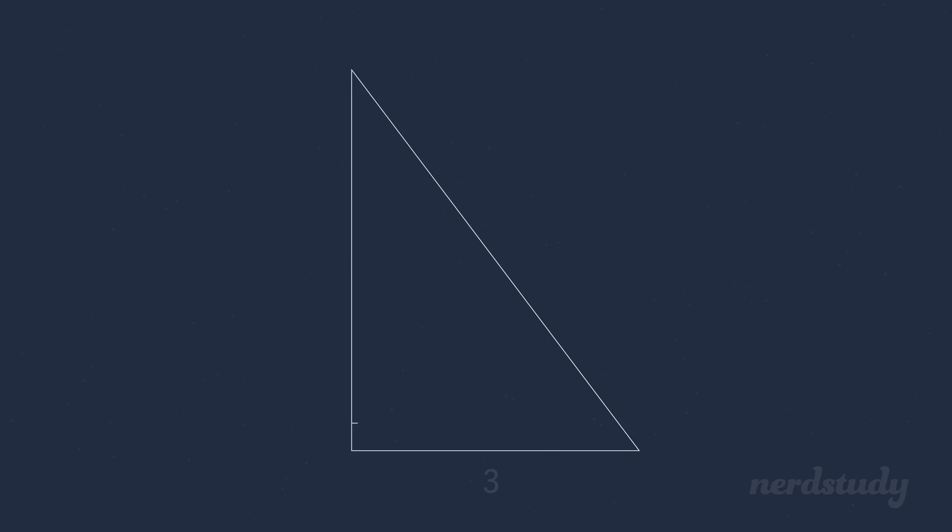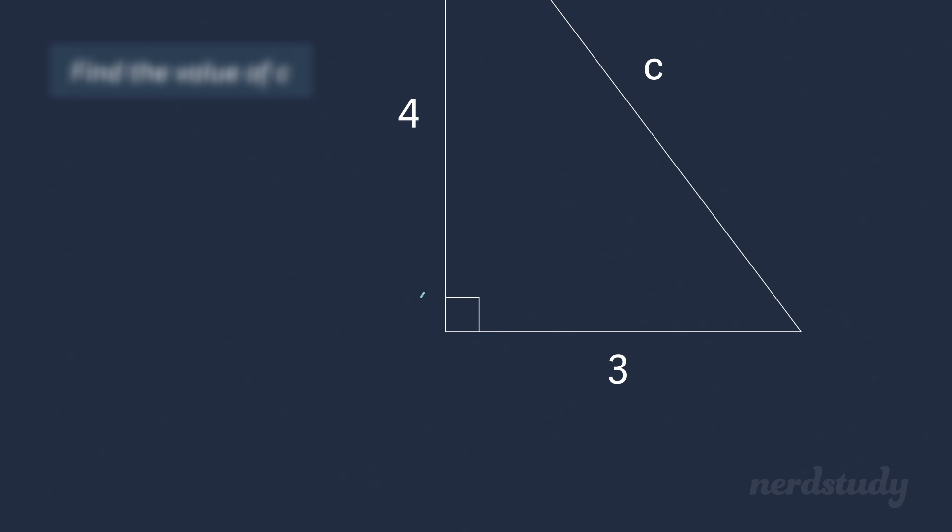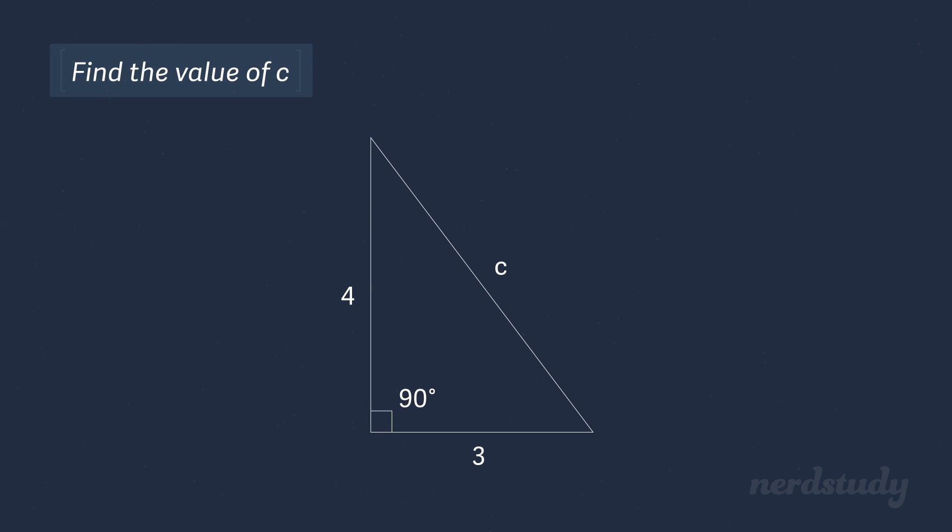Alright, so here's a triangle. We see that one of the side lengths is 3 and the other is 4. We want to find the length of this side right here. First of all, can we use the Pythagorean theorem? The answer is yes, because you can see this angle over here is a right angle, or shall I say, 90 degrees. So it turns out to be the case that the lengths of the two different sides that are provided before us are the lengths of the two legs of this triangle.